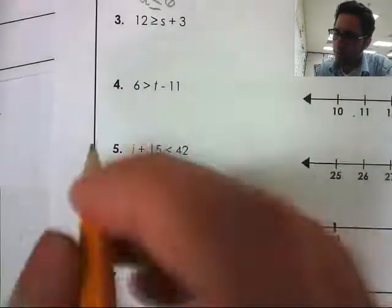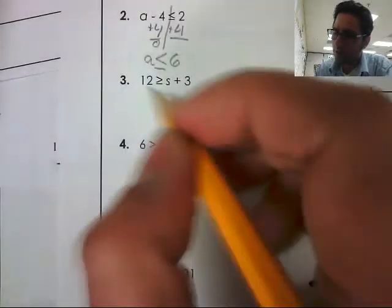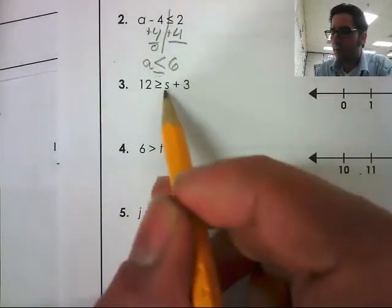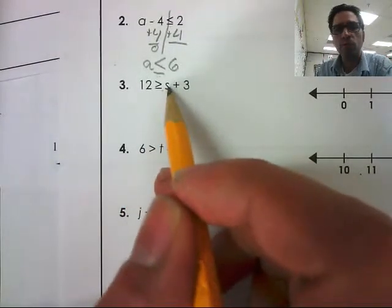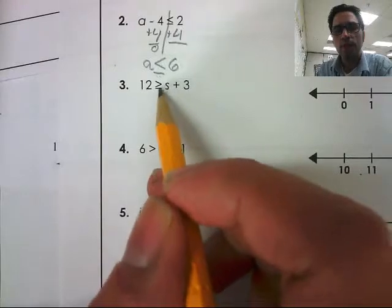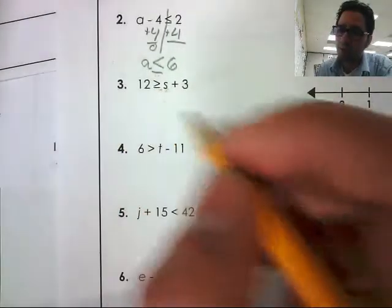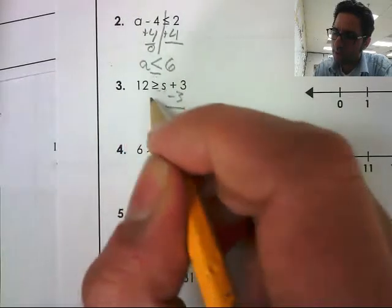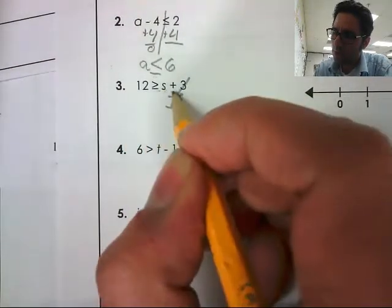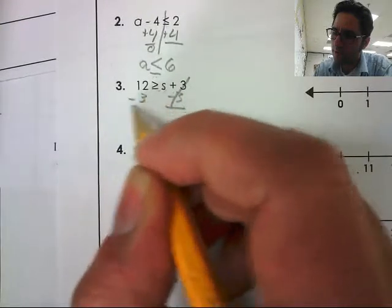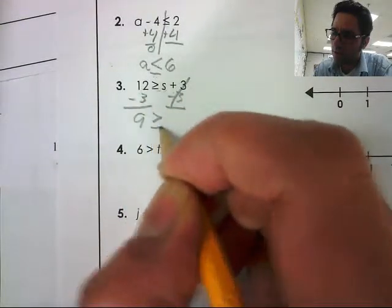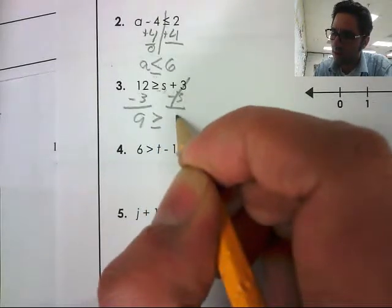All right, I'll skip down. We'll do number 4. Or we'll just do number 3. All right, here we have our variable that's on the right-hand side, so I'm going to solve for S. And then I'm going to switch my inequality around. So I subtract 3 from this side. Cancels out, so we're left with S. Whatever we do to one side, we do it to the other. That gives us 9 is greater than or equal to S.